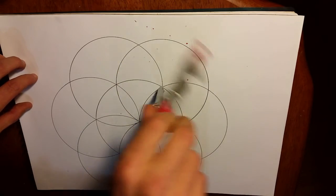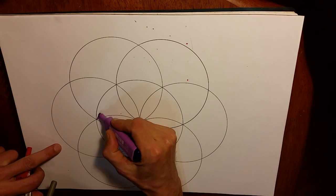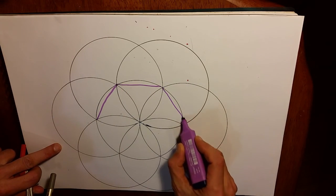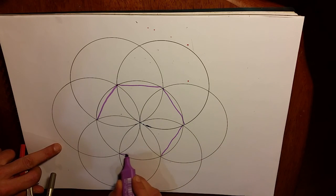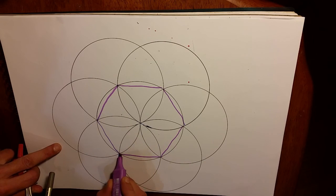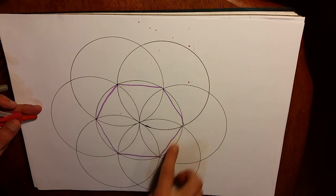And now we have what's called the Seed of Life. Firstly, to highlight the hexagon inside, this will give us a perfect hexagon. This is also in Euclid's Elements, that's one of the proven points in geometry. So we have our hexagon.